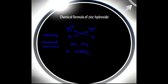Here, two OH minus ions are involved in the formation of zinc hydroxide. Hence, Zn(OH)2 is the chemical formula of zinc hydroxide.